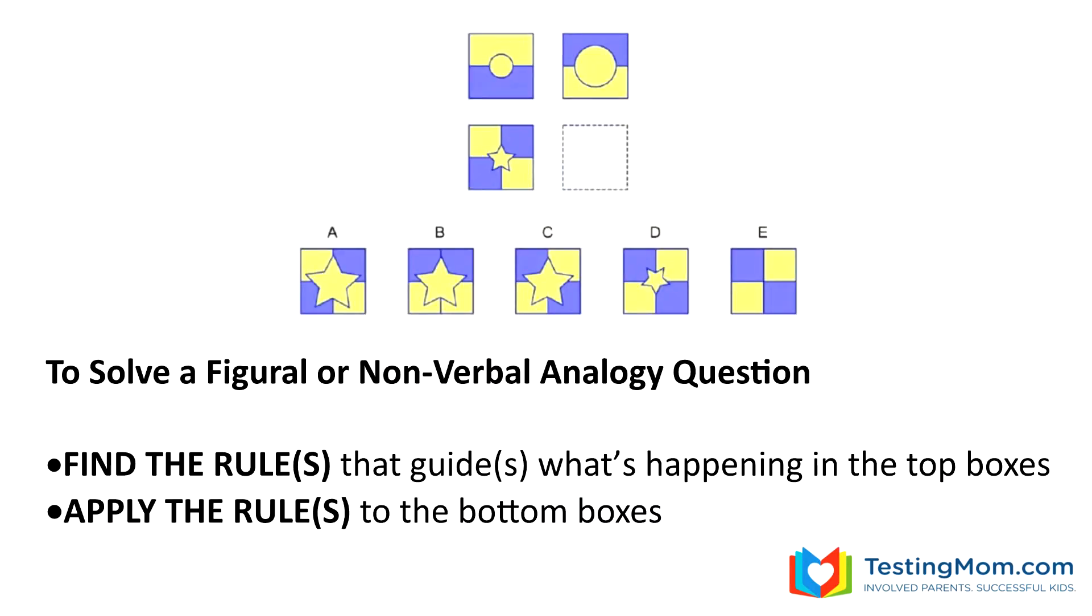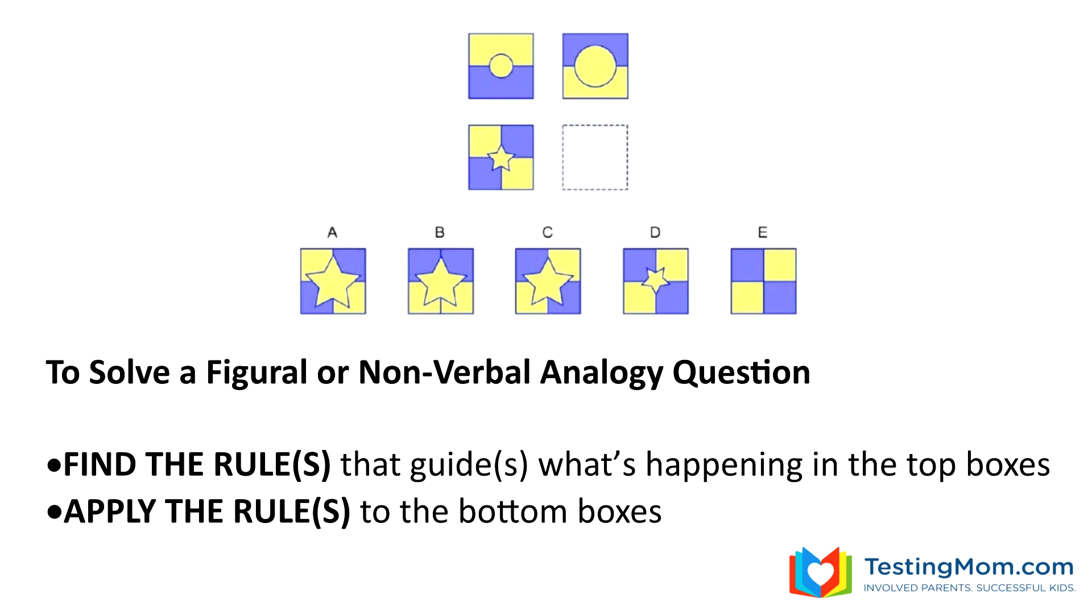Here's how analogy questions work. Whatever is happening in the top box or boxes also has to happen in the bottom box or boxes. Your child needs to identify the rule that guides what's happening to the shapes on top and apply this rule to the shapes on the bottom.